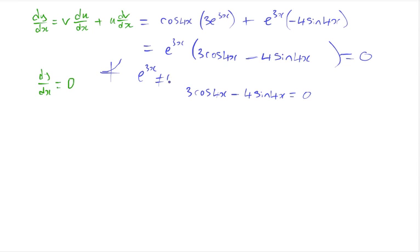Moving this term to the other side, divide by the 4, and then divide by the cos 4x. Remember sine over cos always gives us tan from the identity. Therefore, sine 4x over cos 4x will give us tan 4x.